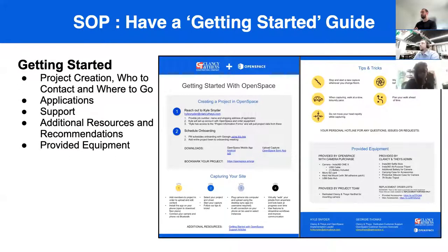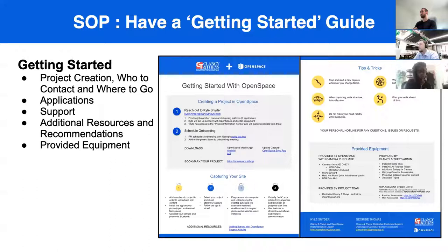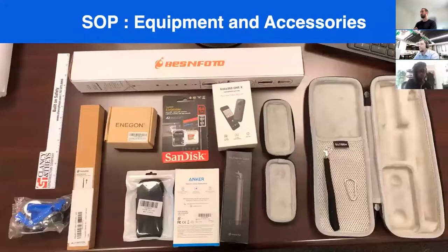We also provide links to additional equipment and where they could purchase that if it breaks or they need duplicate versions. The brochure is shared via a company directory for operations, so it gets put in with all the other software and company operations documents — one spot that gets updated and everyone goes there.